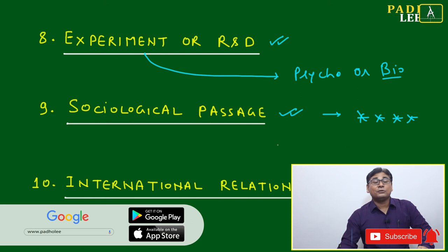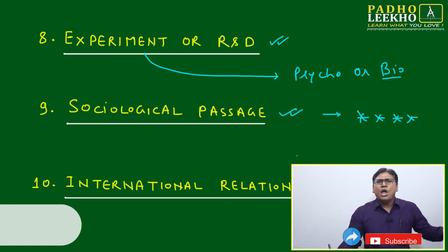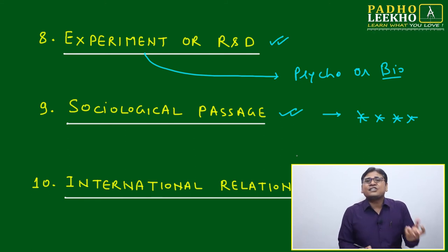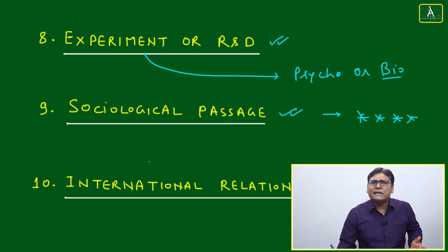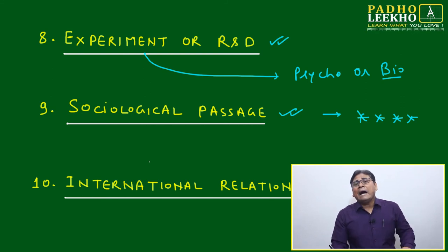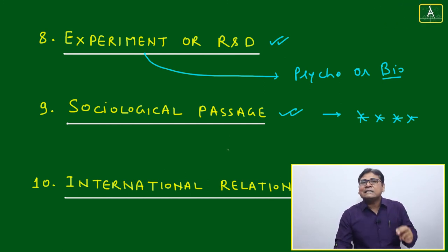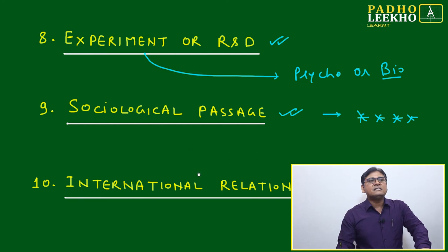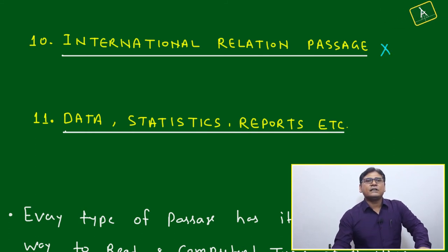Political passages are generally not picked due to too many contradictions and issues, but are sometimes included. Business passages have good frequency. Science and Technology passages are always asked — also 4 stars — and you can easily achieve 80 to 85 percent accuracy because they are mainly data-based and structure-based, covering experiments or research. Sociological passages are 4 stars for frequency, but questions are always tough even though the passage is easy and interesting — for example, a passage on black money in India.